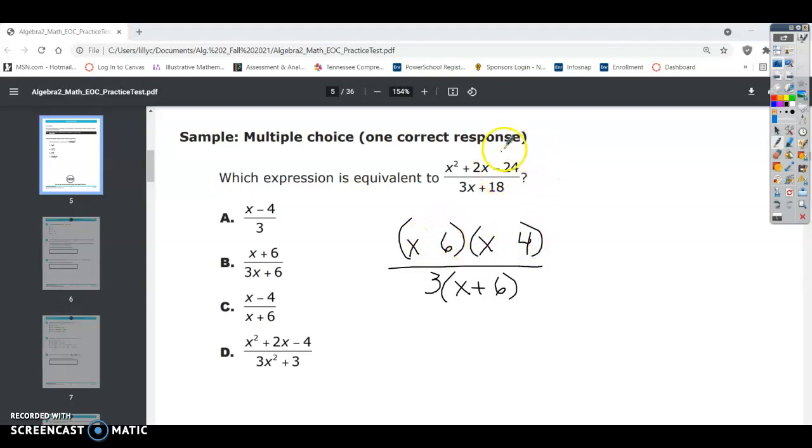And we know we need a negative 24, so one of these has to be positive and one has to be negative in order to get the negative here. So which one is positive and which one's negative? To add and get a plus, that means the bigger number has to be positive. Alright, that means the other one's negative.